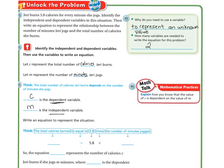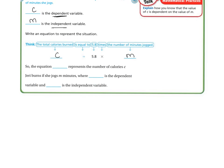So let's write an equation to represent the situation. The total calories burned is C, and it's going to be equal to 5.8 times the number of minutes that she jogs. So the equation is C equals 5.8M.